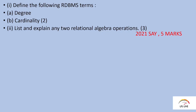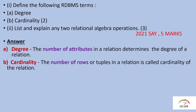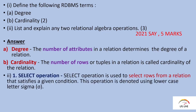Define the following RDBMS terms: degree and cardinality. Degree of a table is the number of columns, that is, the number of attributes. Cardinality is the number of rows or tuples in a table.